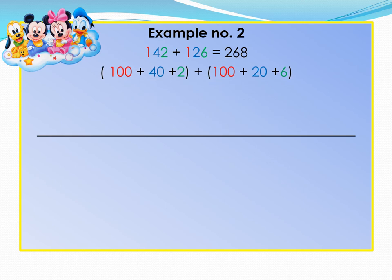Group them together according to their common place values. 100 plus 100, 40 plus 20, 2 plus 6. Now work out the sums within the brackets. 100 plus 100 gives you 200. 40 plus 20 gives you 60. And 2 plus 6 gives you 8.